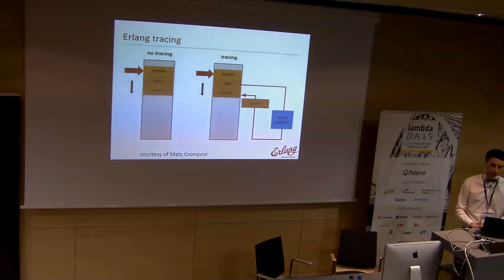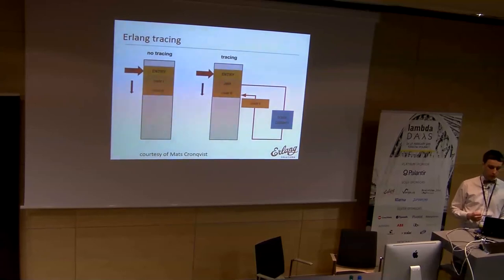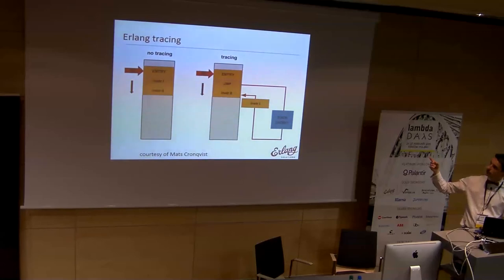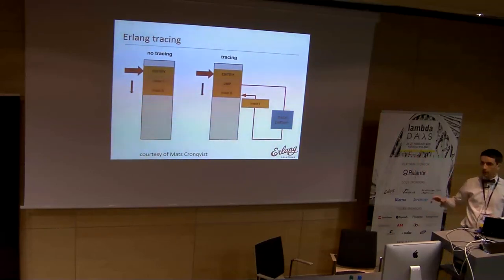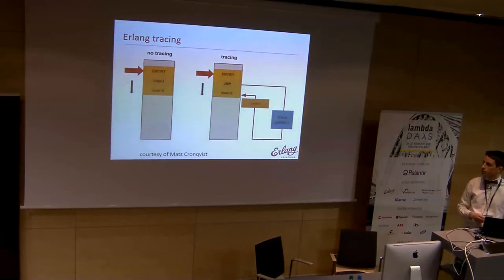I borrowed this slide from Mats. You can enable and disable tracing on a live system, and it doesn't cost much to have tracing on or off as long as it doesn't trigger. When we turn on tracing, we just have this extra jump instruction which lets us go through some tracing pattern. We do some pattern matching, and if it triggers a tracing event, we generate it; if not, we just continue with the next instruction. It does have some overhead, of course, but it's not a disaster.